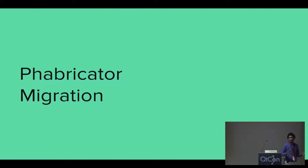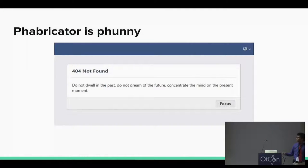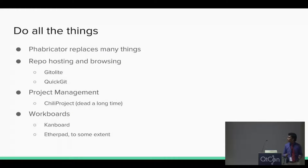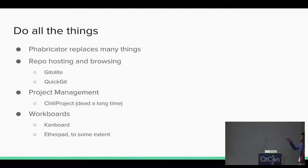Sometime during the last year, before last Akademy, the KDE community decided we're going to replace a whole bunch of tools with Fabricator — it's one tool for project management, task boards, ticketing, and a lot more. So what do we use Fabricator for? It replaces repo hosting and browsing: we currently use Gitolite for access control and QuickGit to browse repositories, and all of that will be replaced by Fabricator's Diffusion app, which handles both access control and repository browsing.